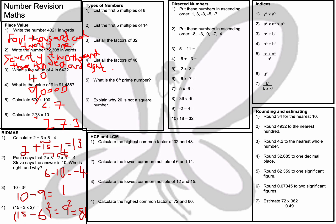Whenever you see these sums, always remember BIDMAS — Brackets, Indices, Division, Multiplication, Addition, and Subtraction. In some textbooks it might be written as BODMAS, where the O represents 'other', meaning indices or anything else. Always follow that rule when a sum involves more than one operation.